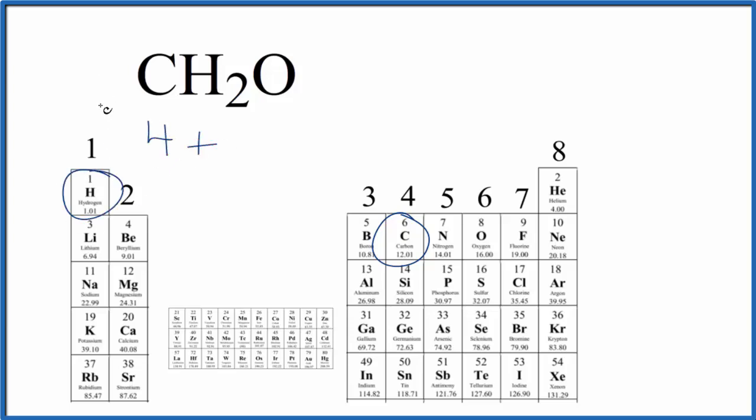Hydrogen, group one. All of these have one valence electron. We have two hydrogen atoms. And then oxygen right here, group 16, sometimes called 6A, six valence electrons. Four plus two plus six. That gives us twelve total valence electrons for the CH2O Lewis structure.